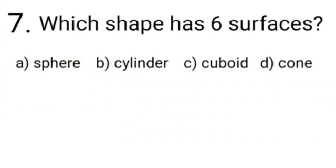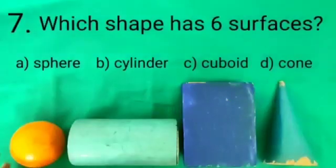Now let's solve question number 7, which shape has 6 surfaces. For this question, we have 4 options. Our option A is sphere, option B is cylinder, option C is cuboid and option D is cone. Let's see students.